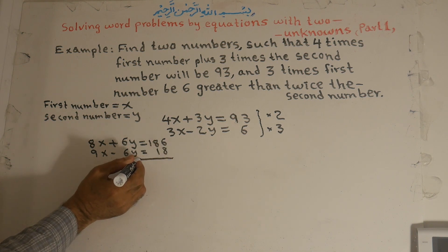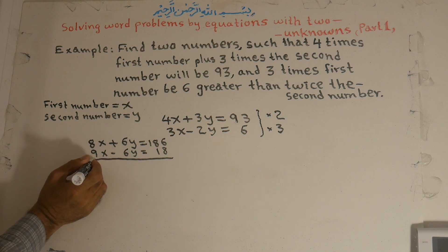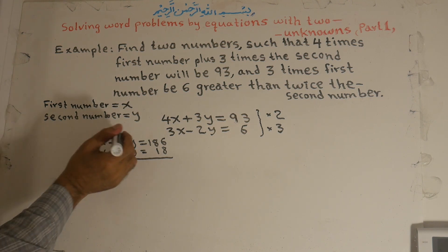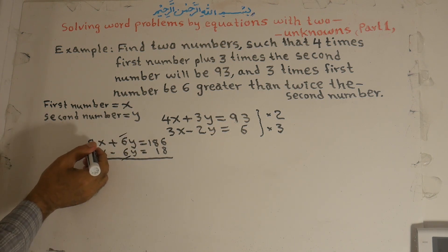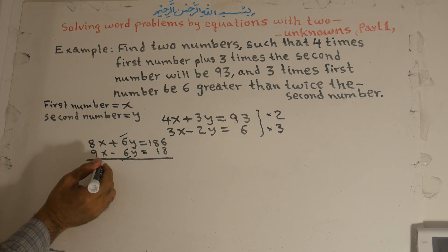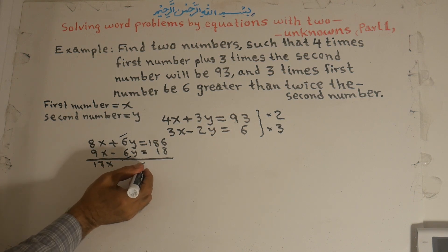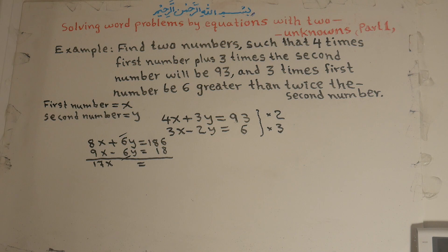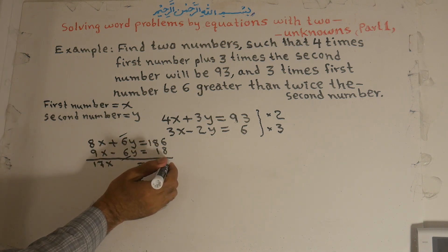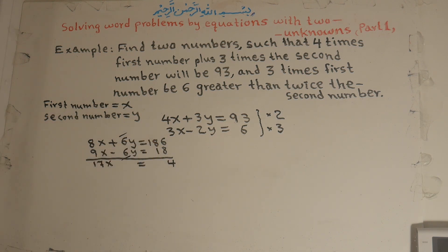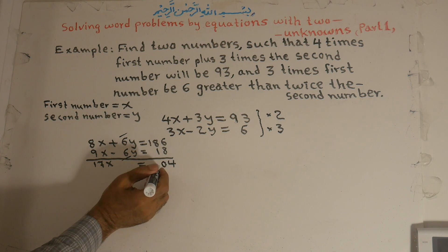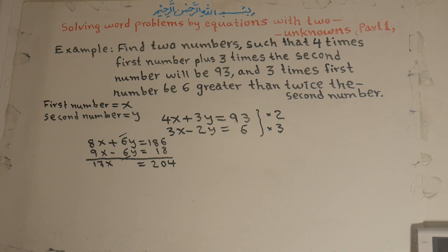Now we add these two equations algebraically. The positive 6y cancels with the negative 6y. Remaining: 8 plus 9 is 17x. On the right side: 186 plus 18 equals 204. So 17x is equal to 204.